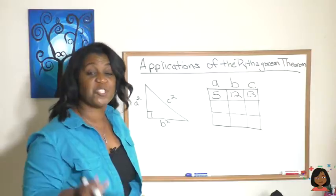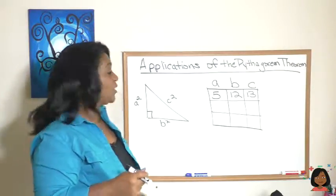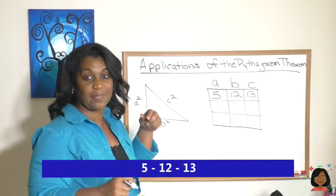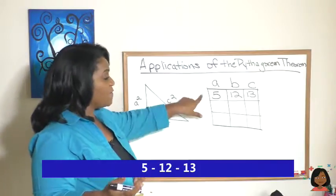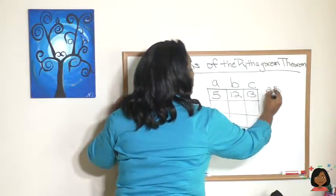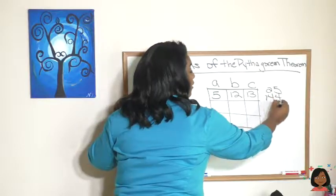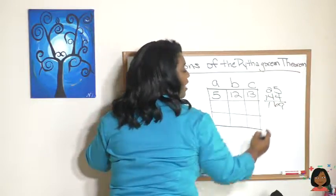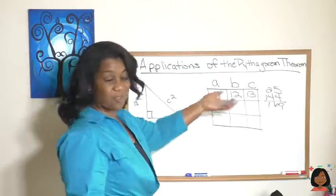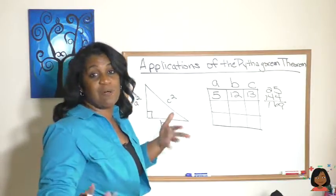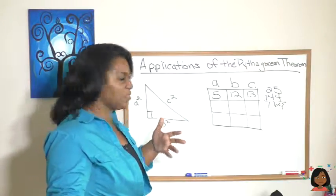Let me introduce you to another Pythagorean triplet. This one is the 5, 12, 13 triplet. Let's take a look at this one. Five squared is 25, 12 squared is 144. If we add them together, we get 169, which is 13 squared.